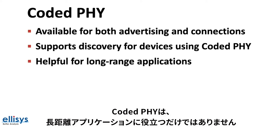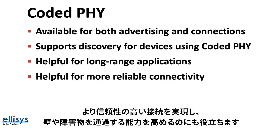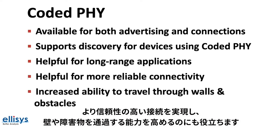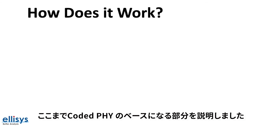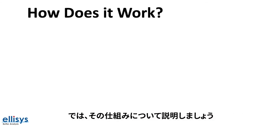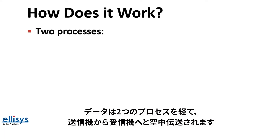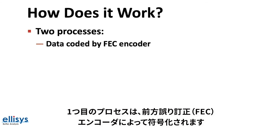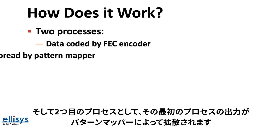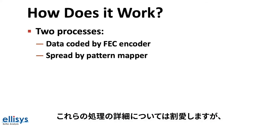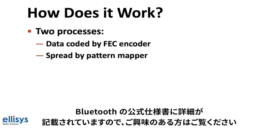Not only is Coded PHY helpful for long-range applications, it is also helpful for achieving more reliable connectivity and increased ability to travel through walls and obstacles. The data goes through two processes before being transmitted: first it gets encoded by a forward error correction (FEC) encoder, and second the output gets spread by a pattern mapper. These operations are detailed in the official Bluetooth specification for those interested in learning more.